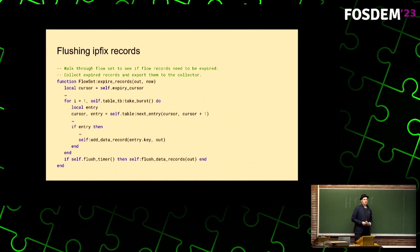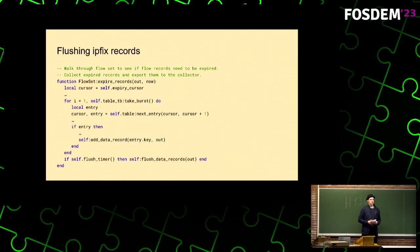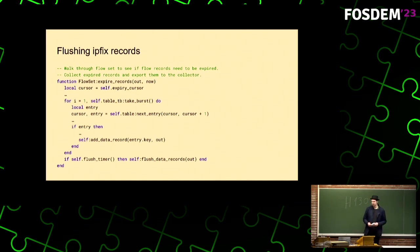Here's one more snippet. This function is called periodically to actually export the flows. We walk over a section of the flow table and add flow aggregates into a next data export record. When it's time to export, we send it off to an IPFIX collector, which is a separate program.